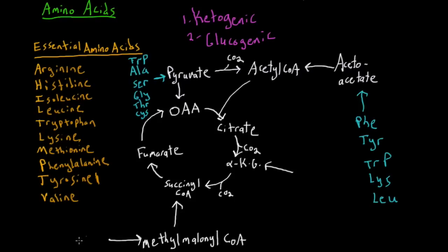We can also convert into methylmalonyl-CoA — isoleucine, methionine, and valine work here. We can also feed into fumarate with tyrosine and phenylalanine — and these two structures are very similar because they differ only by a hydroxyl group — as well as aspartate.